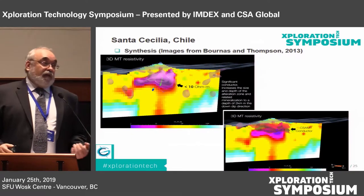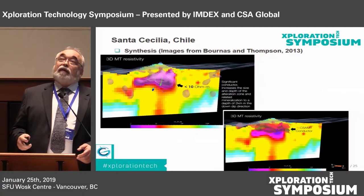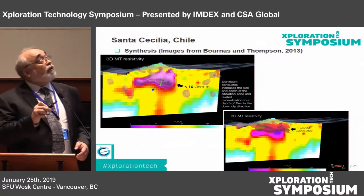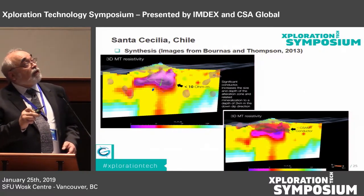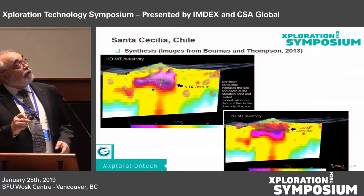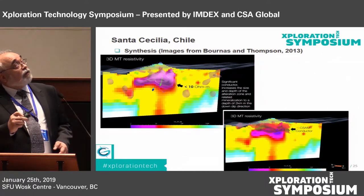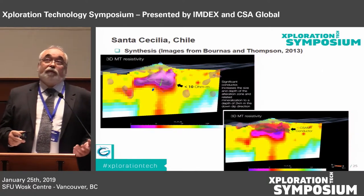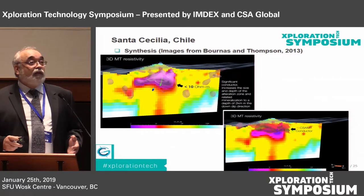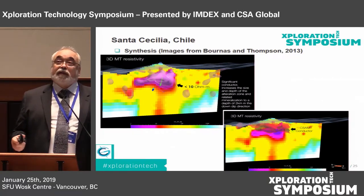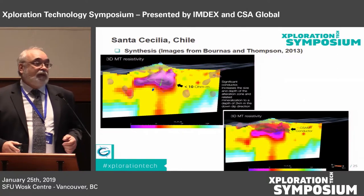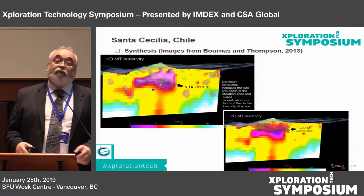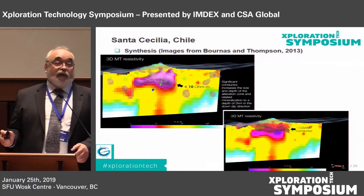Bringing in the controlled source audio magnetotellurics — the purple surface in these images — it's a conductivity shell at 10 ohm-meters. We can see that the magnetotellurics has mapped it out much deeper. Where the drill holes actually come through, the mineralization in the drill holes is almost perfectly matching the conductivity shell, and this is with completely unconstrained inversions. The next stage is to take this limited geologic data, use it to constrain the inversions, and see if we can do an even better job of defining the actual body and system.